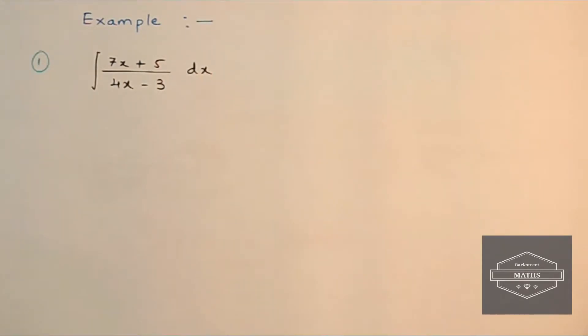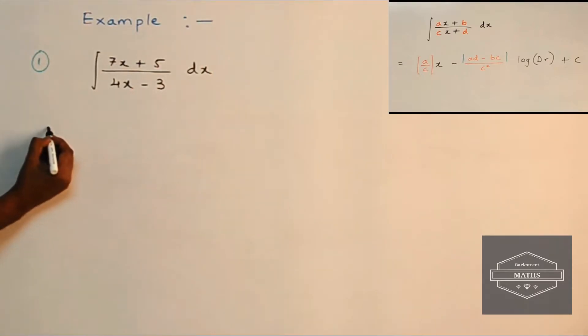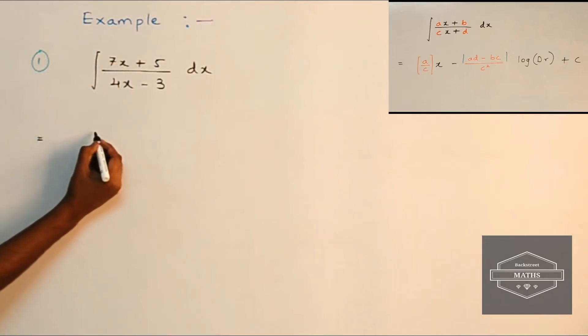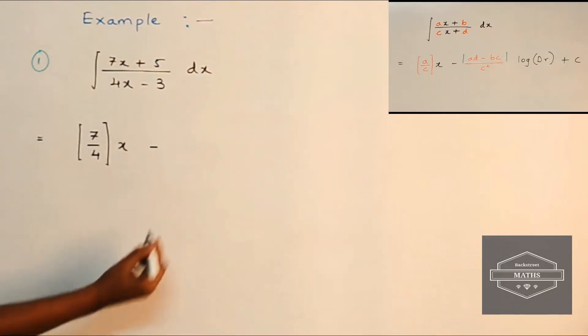All right, so let's have a look at the first sum that we have here. Now the structure of this sum is exactly same as our standard formula, so we can straight away apply this shortcut. So this will be equal to, in the first term we write a upon c, so here it will be 7 upon 4. So here it will be 7 upon 4, and this is our first term. Let's multiply this with x minus.